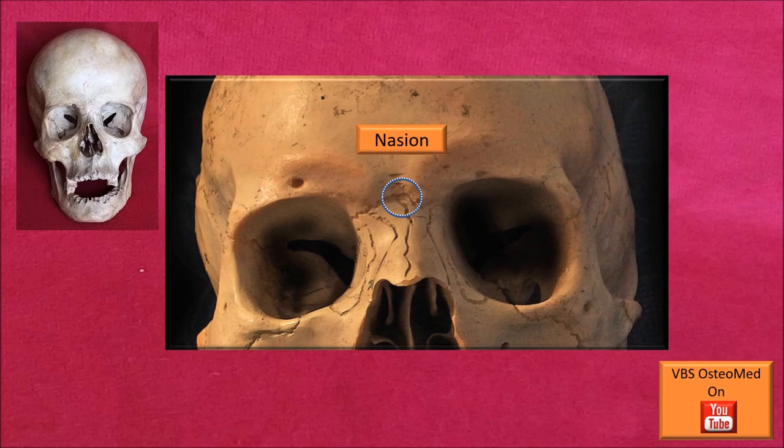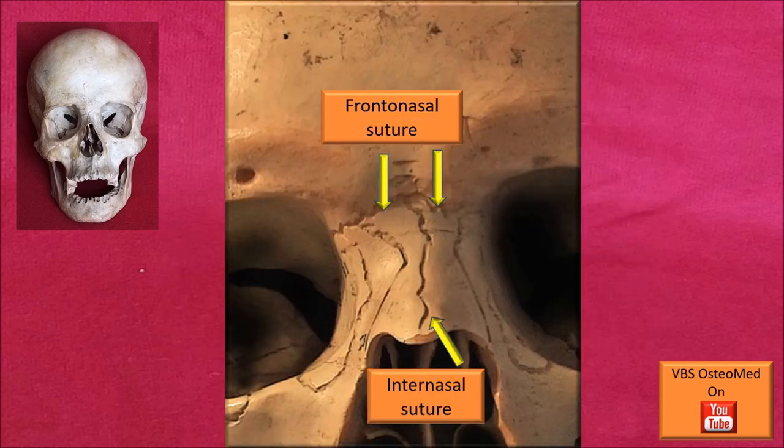Right below the glabella is a junction of sutures, known as the nasion. This junction is actually the junction between two sutures: the frontonasal and internasal sutures.